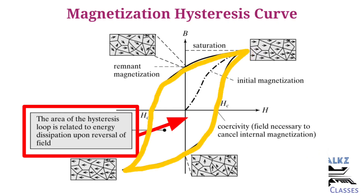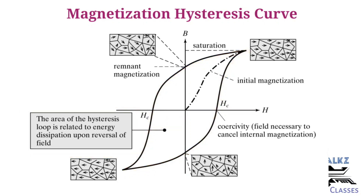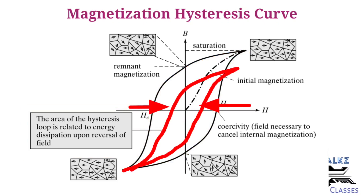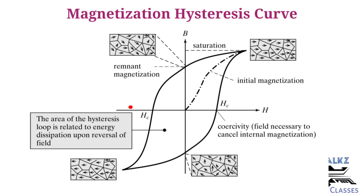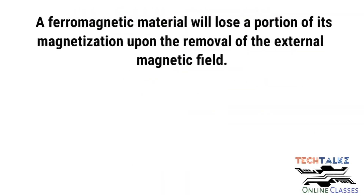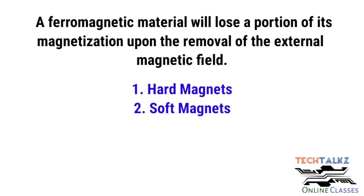The area enclosed by this hysteresis curve indicates the amount of magnetic energy stored in a magnetic material. Different ferromagnetic materials have different curves. For ferromagnetic soft materials the loop is skinny and small. For hard ferromagnetic materials, the loop is bulky and wide. A ferromagnetic material will lose a portion of its magnetization upon the removal of the external magnetic field. There are two important classes of ferromagnets: hard magnets and soft magnets, differentiated by their hysteresis curve.